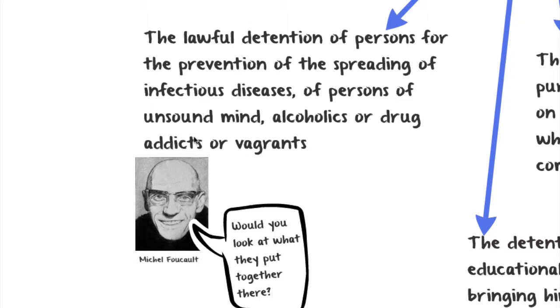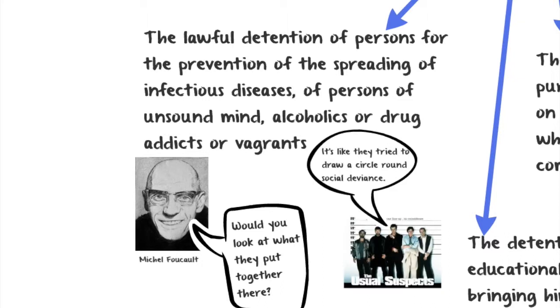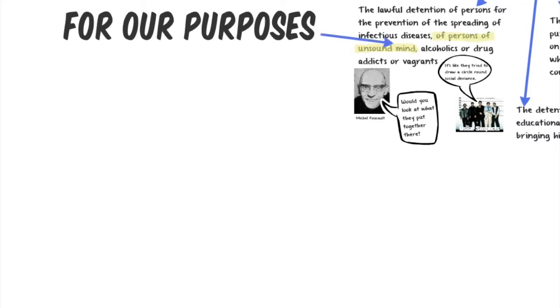Michel Foucault points out a curious relationship here between the control of infection, the regulation of madness, and the regulation of vagrancy or residency. For Foucault, these would all be instances of things that are 'out of place' — vagrants aren't where they should be, unsound mind is very often constructed as being 'out of your mind', and infectious disease involves organic agents in the wrong place in the body. There is the standard Foucauldian critique of whether it is right and proper that we consider all these things comparable objects under the law — but for our purposes, we're going to look specifically at persons of unsound mind.